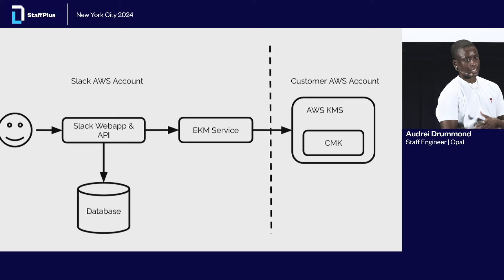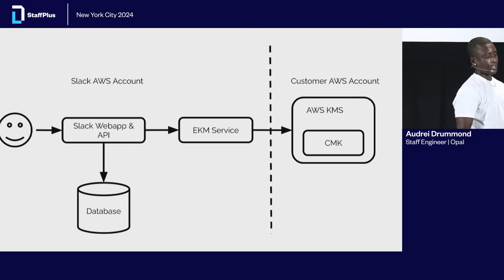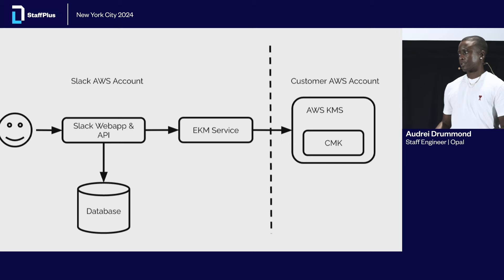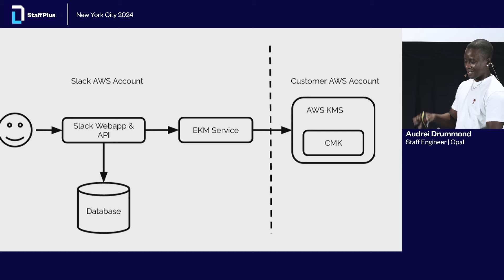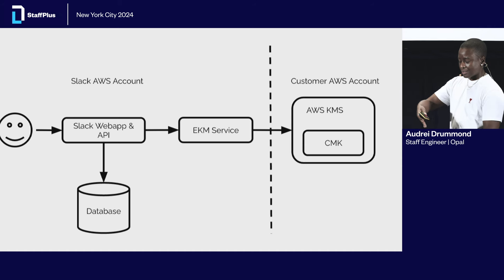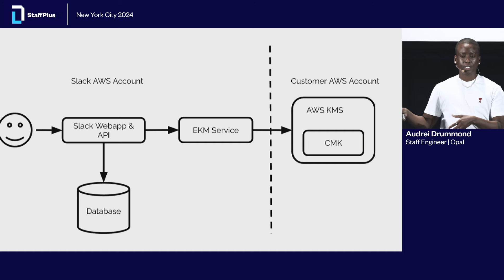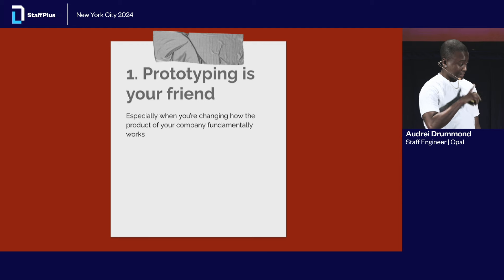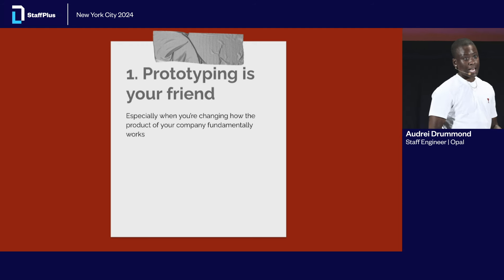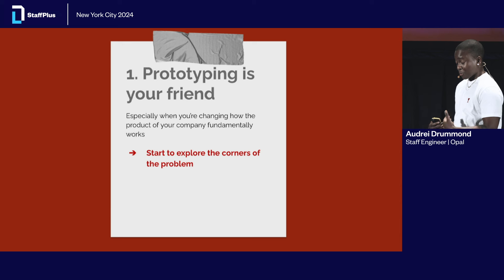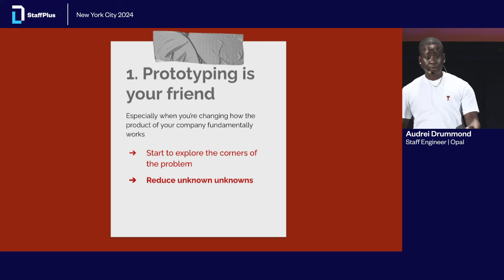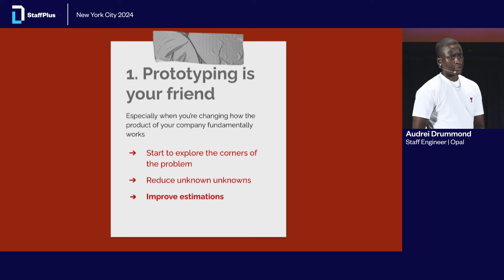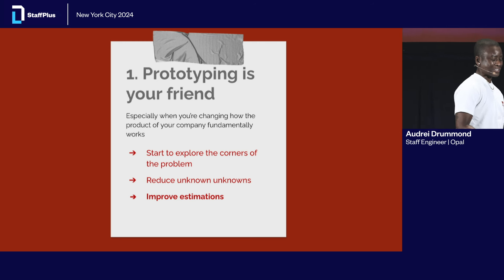When I was first presented with EKM, I was talking to one of the directors in my organization and we had a brainstorm session to figure out what a high-level architecture could look like. We have a client talking to the Slack web app backend, which talks to the database, which talks to the EKM service on Slack's side, and that connects to AWS KMS on the customer's AWS account. The first lesson I learned is prototyping is your friend, especially when you're fundamentally changing how your product works. I didn't really know how message sending worked, so prototyping helped me explore the corners of the problem, get a better sense of what actually needs to be built, reduce the unknown unknowns, and improve estimations as I brought on other engineers and talked to leaders about whether we'd ship on time.